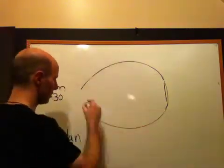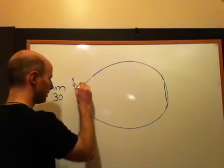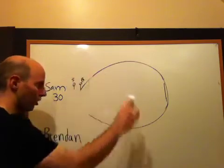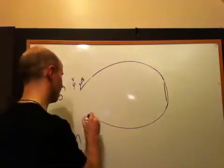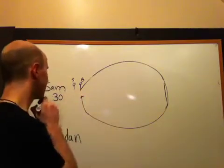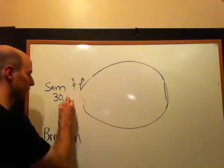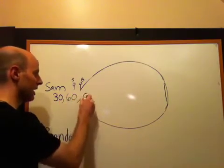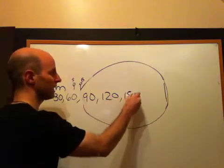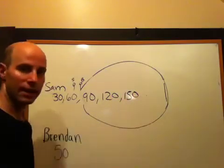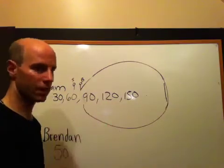So if Sam was to go around this, if they both started at the same time, here's Sam, here's Brendan, if they both start at the same time, when are they both going to be back at that starting point? Well, let's see. Sam is going to be back after 30 seconds, 60 seconds, 90 seconds, 120 seconds, 150 seconds, and so on. Every 30 seconds, he returns to that start.